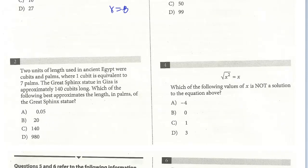All right, let's take a look at question 2. Two units of length used in ancient Egypt are cubits and palms, where one cubit is equivalent to seven palms. The Great Sphinx statue in Giza is approximately 140 cubits long. Which option best approximates the length in palms of the Great Sphinx statue? This is just a unit conversion question.